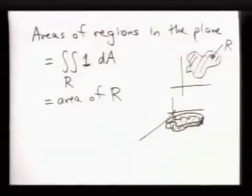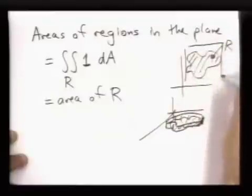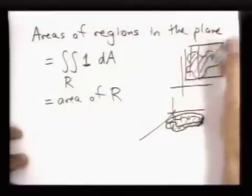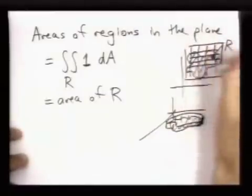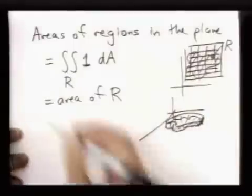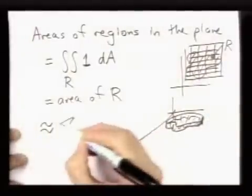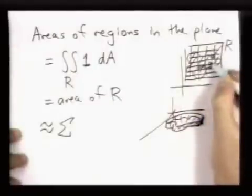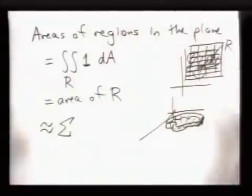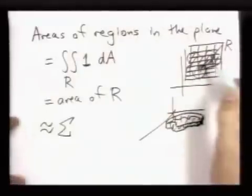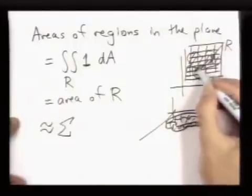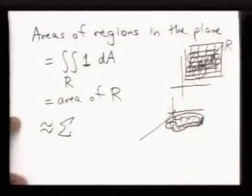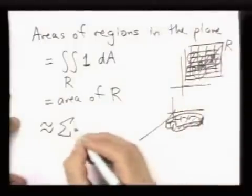The other way to think of it is that the way we approximate this with Riemann sums is by cutting it up into a bunch of rectangles. And a way we can approximate this is just by summing up areas of rectangles that sit inside the region. So if our, if the way we partition this rectangle is fine enough, there will be lots of tiny rectangles inside the region R, and we just add up the areas of those.